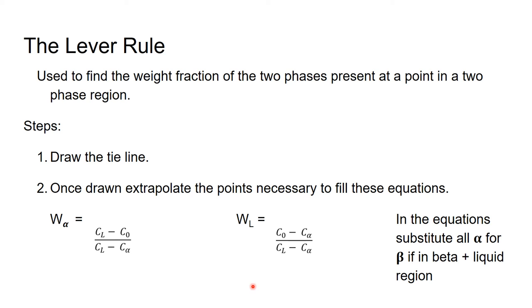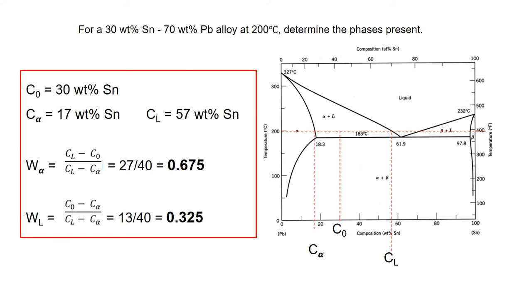Now onto the example. For example, to determine the phases present for a 30 weight percent tin and 70 weight percent lead at 200 degrees Celsius. First, we should draw the tie line at 200 degrees Celsius. Then, we have to find C0, C alpha, and C liquid. In this case, C alpha equals around 17, C0 equals 30, and C liquid is about 57 weight percent tin. To calculate W alpha, W alpha equals C L minus C0 over C L minus C alpha. W alpha equals to 27 over 40 equals 0.675, or about 67.5%. W L equals to C0 minus C alpha over C L minus C alpha equals 13 over 40 equals 0.325, or around 32.5%.